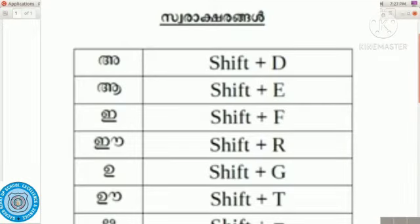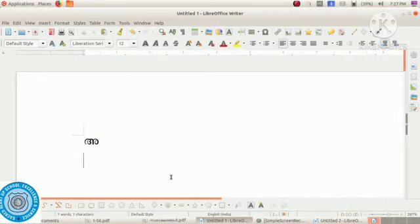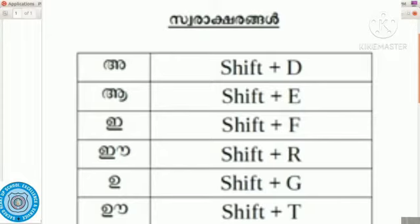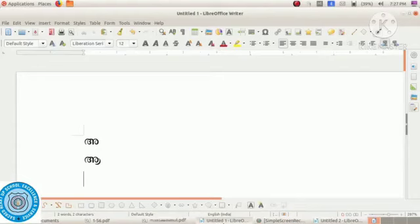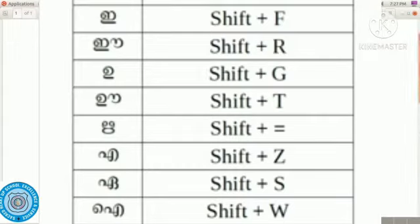The next letter to be typed is 'ā'. For that we have to press Shift key and E. Shift key and E gives the Malayalam letter 'ā'. The next letter is 'e' — press Shift key along with the key F, it gives the Malayalam letter 'e'. The next is 'ē' — to type 'ē' we have to use Shift key plus R.